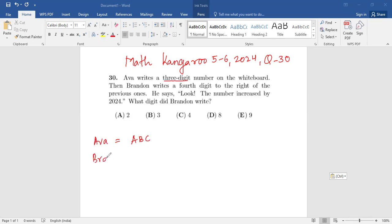And then what did Brandon do? Brandon wrote a fourth digit to the right. So this was the number, and let's just change the color. Brandon wrote this, so now it became a four-digit number.